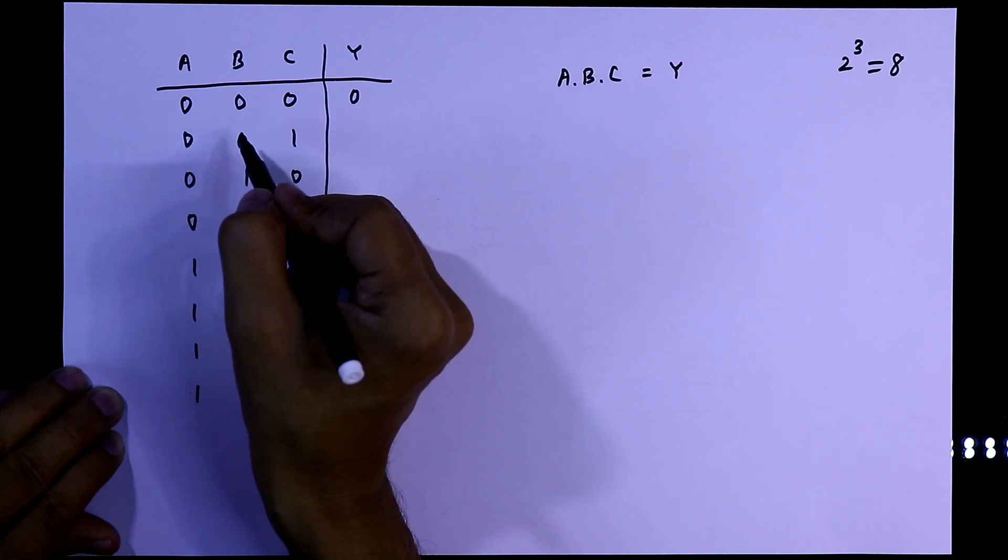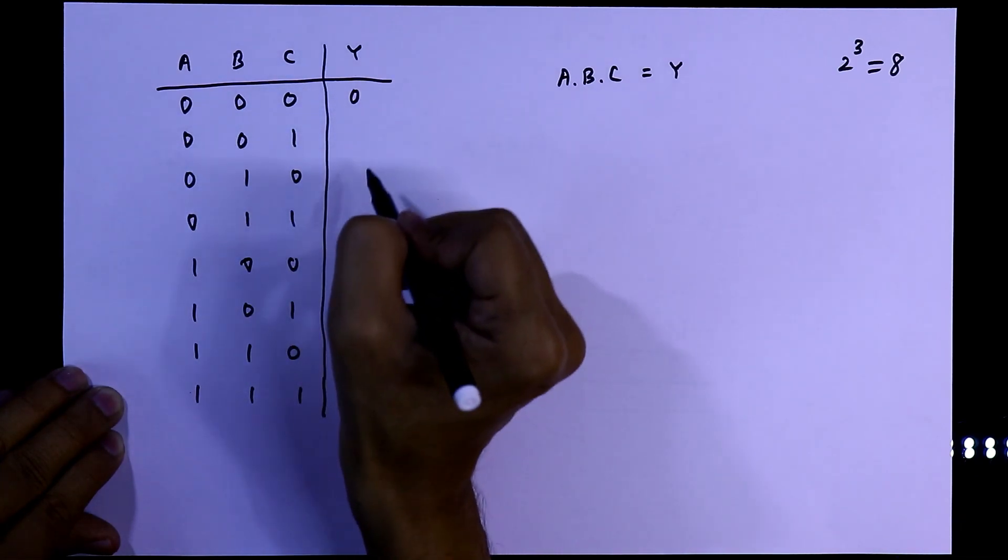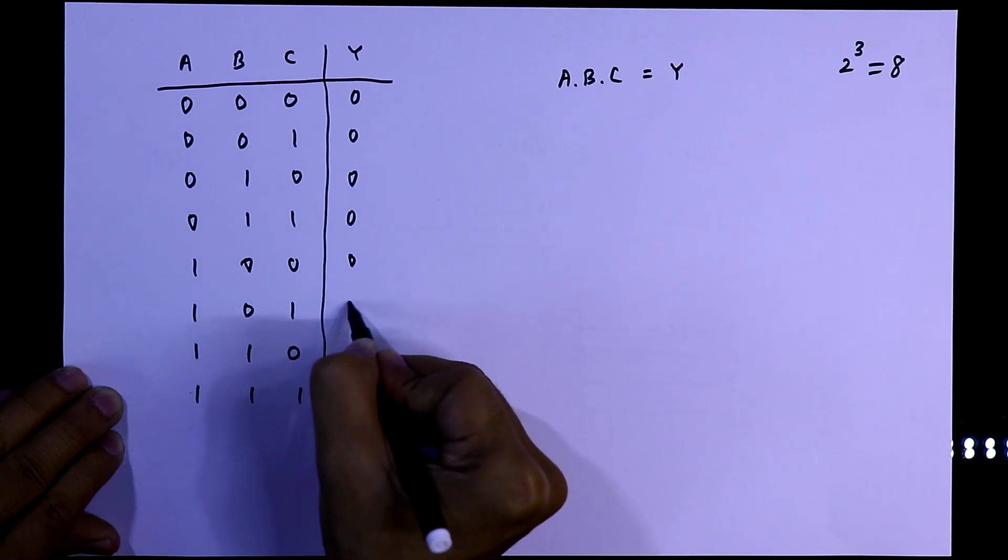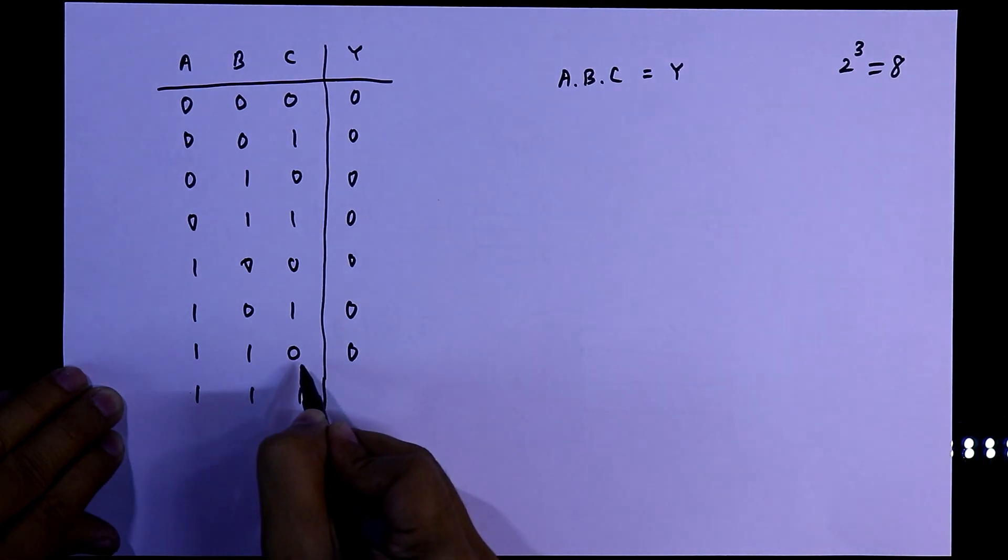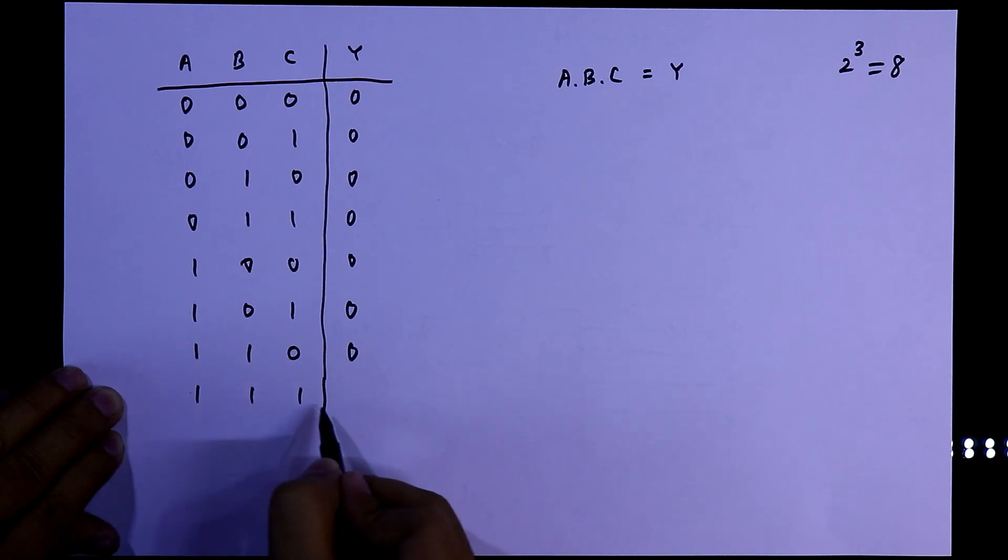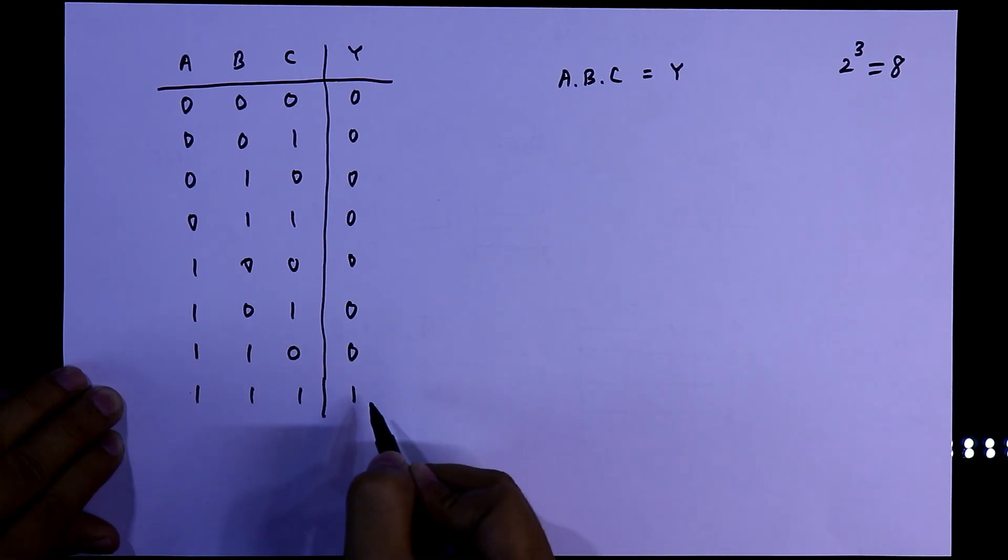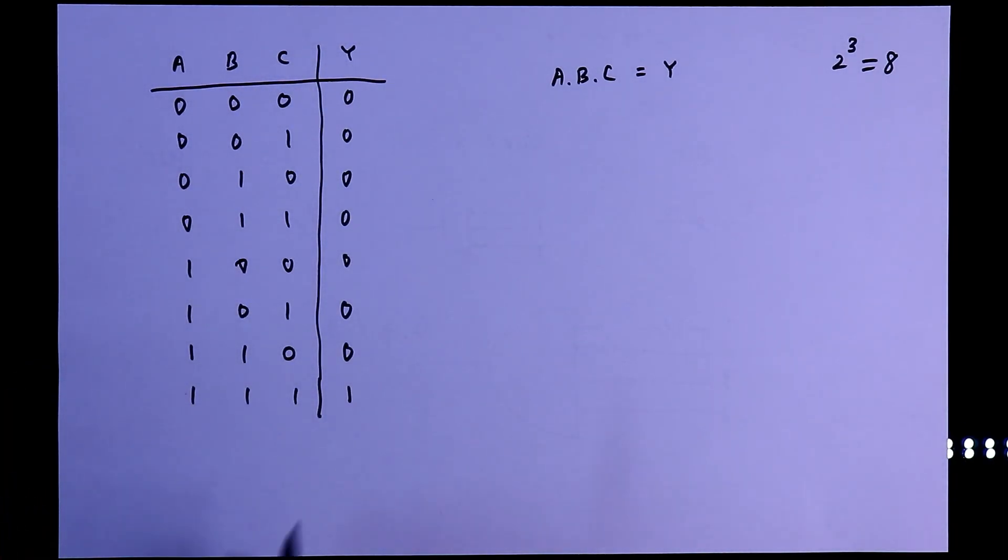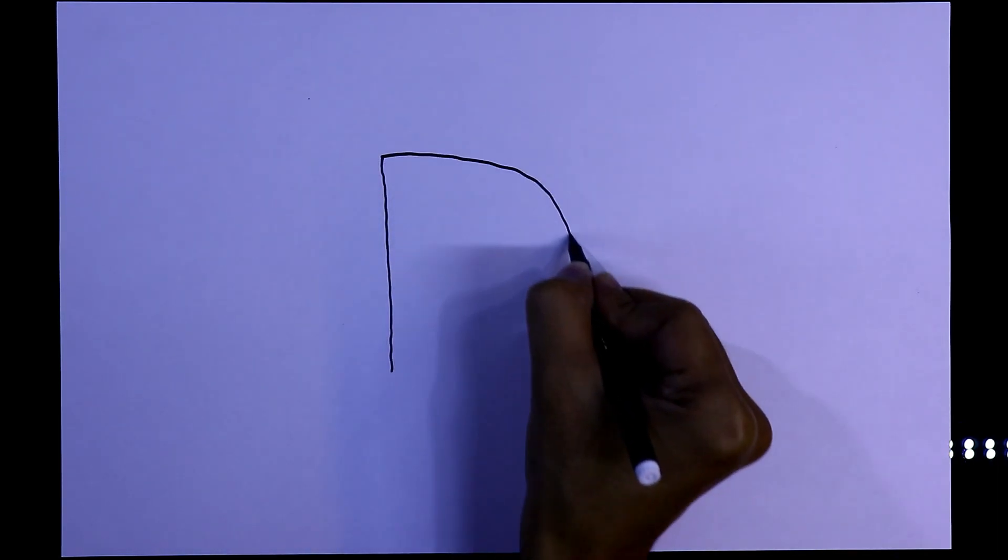The output is 0 until all three inputs are 1. Only when we have three 1s will the output be 1. This is our truth table, and we have to verify this on the breadboard. For gate 1, pin number 6 is the output, and pins 3, 4, and 5 are the inputs.